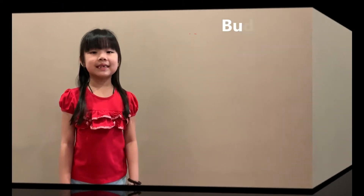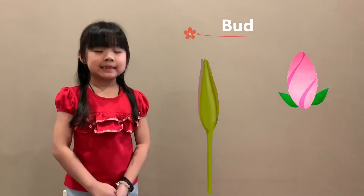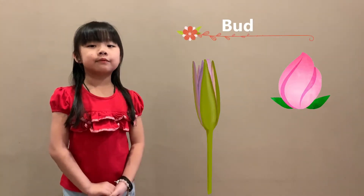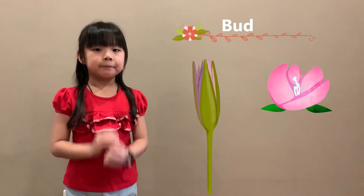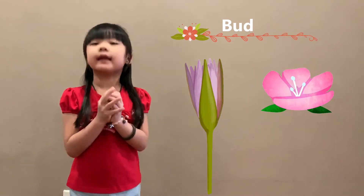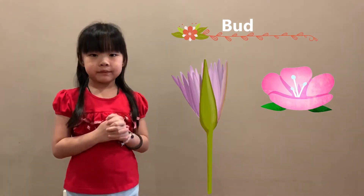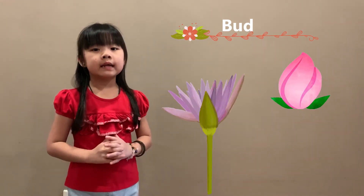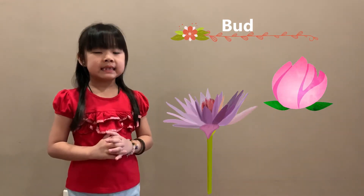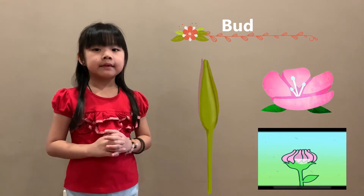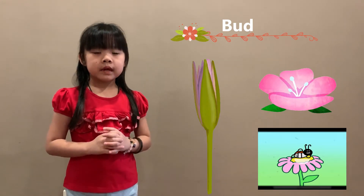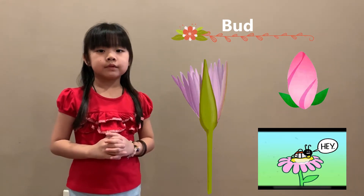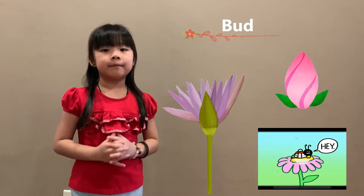Now let's start with buds. Buds will protect the baby flower and baby leaves from the bees and other insects that will destroy them.